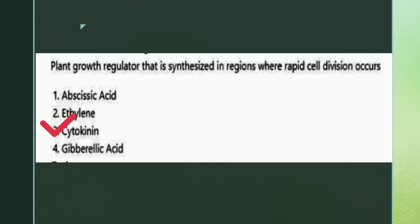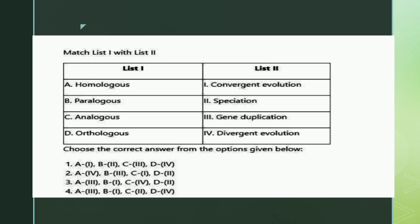The next is a match the following. List one: homologous, paralogous, analogous, orthologous. List two: convergent evolution, speciation, gene duplication, divergent evolution. The right answer is option two: homologous - divergent evolution, paralogous - gene duplication, analogous - convergent evolution, and orthologous - speciation.